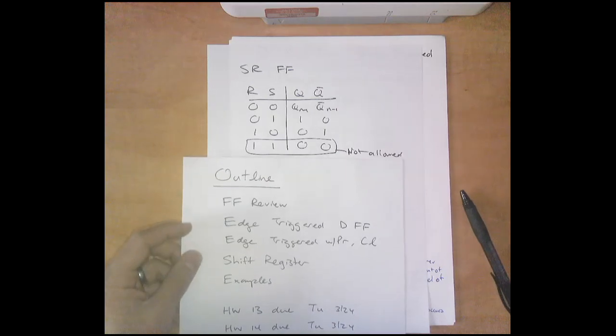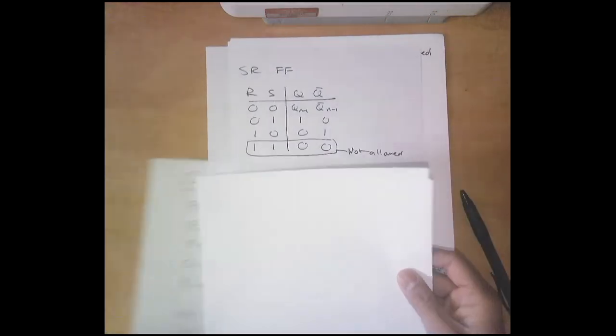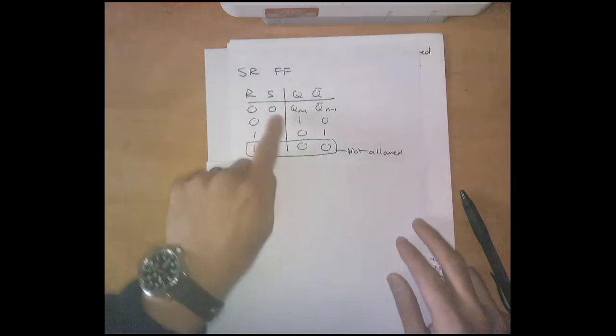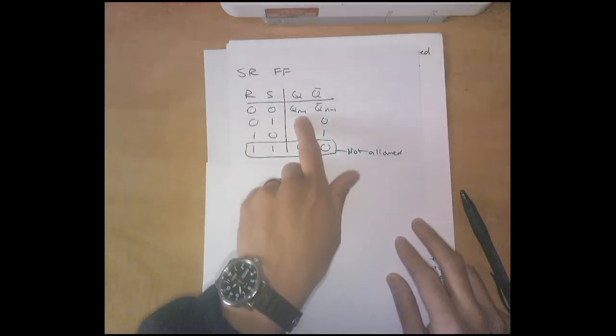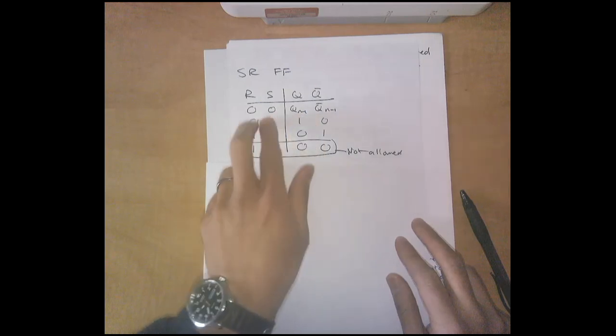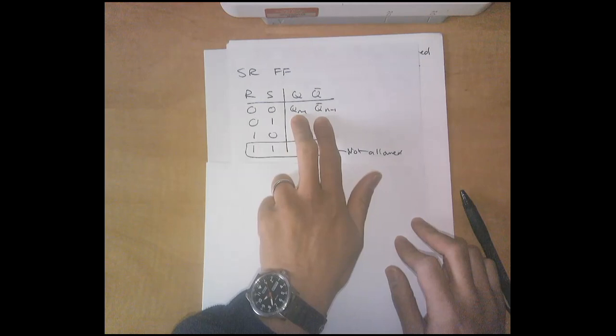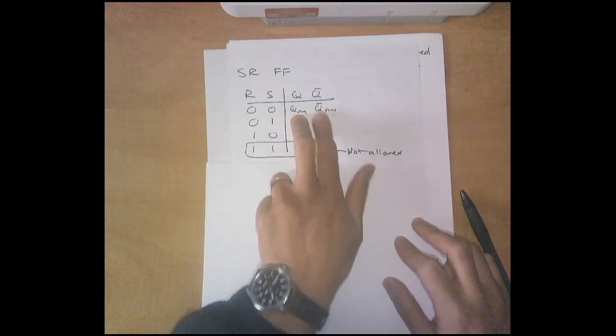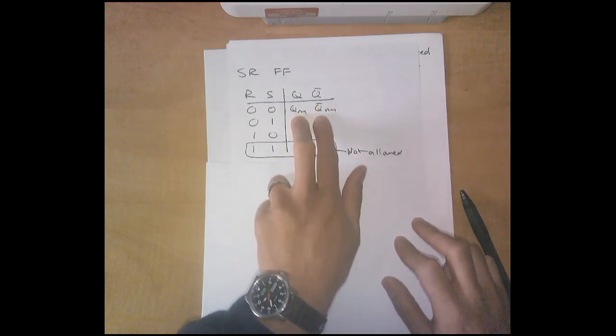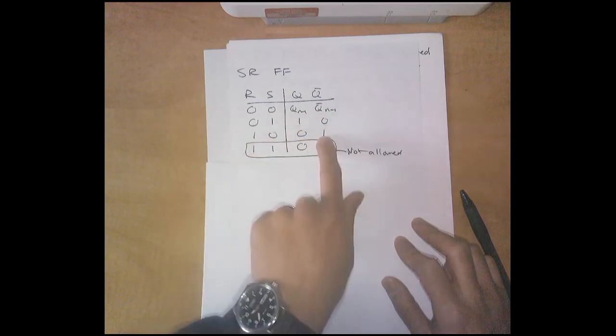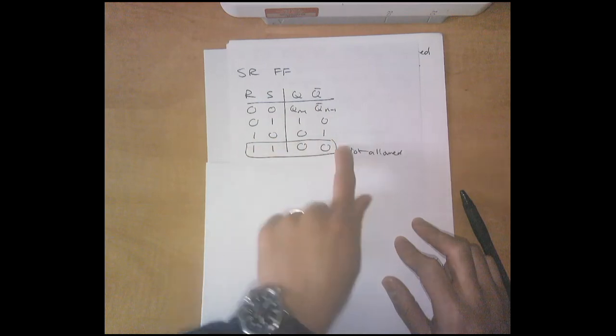Quick review: the SR flip-flop had a simple truth table with just a set and a reset, and outputs Q and Q bar. If set and reset are both zero, there's a memory aspect where Q and Q bar hold their previous values. If you hold the set button down, Q is high. If you hold the reset button down, Q bar is high. We don't allow one-one because it erases memory.